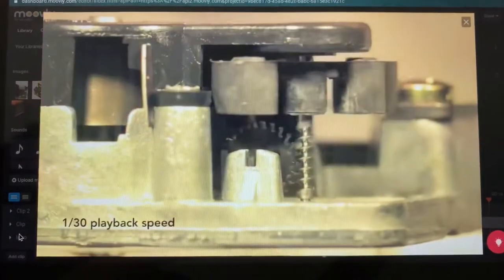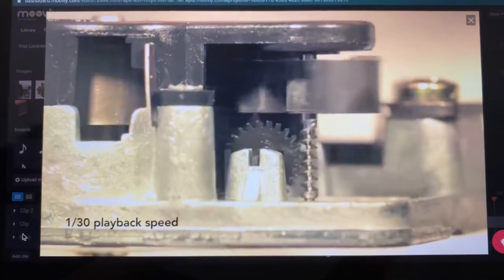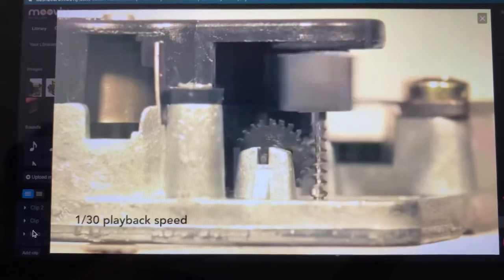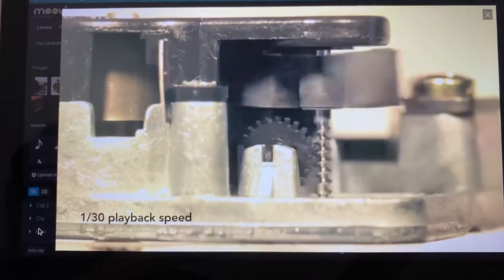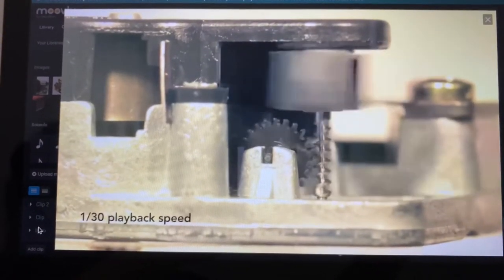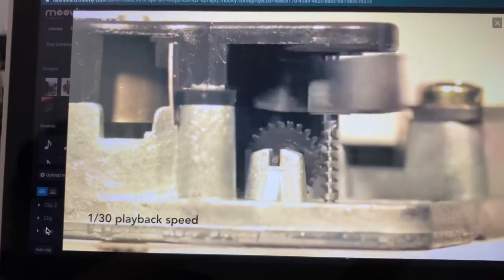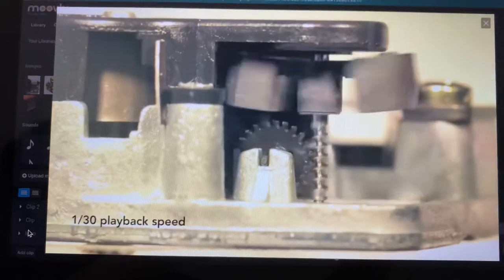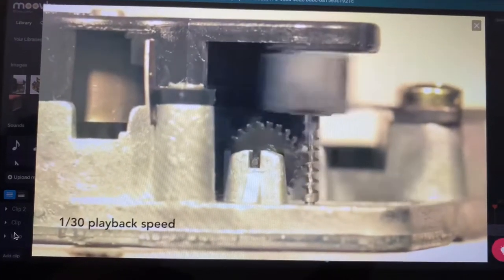And our final component is the governor. The rotation of the governor controls the speed of the music box. If there was no governor, the music would play rapidly and the timing would be completely off. But if there is a governor, then it'll slow down using wind resistance so the melody would be played at a slower pace.